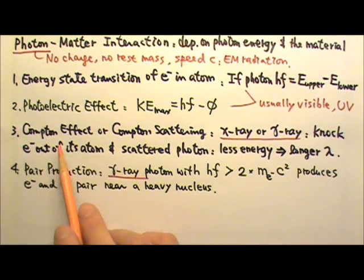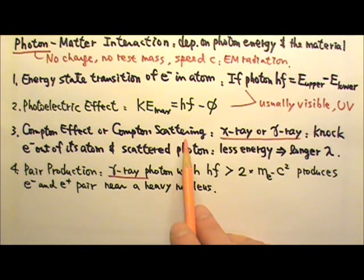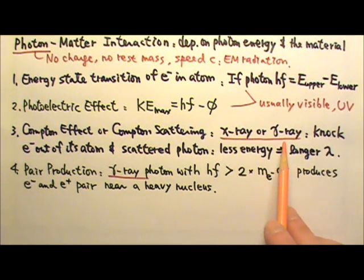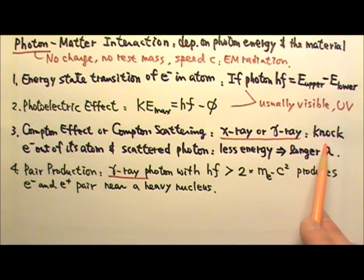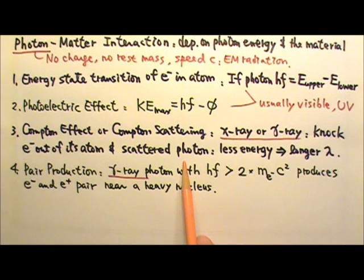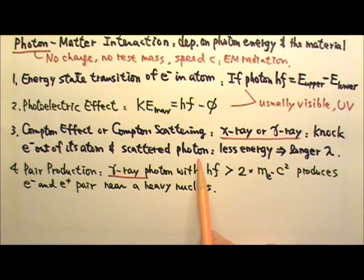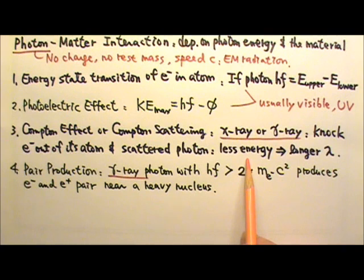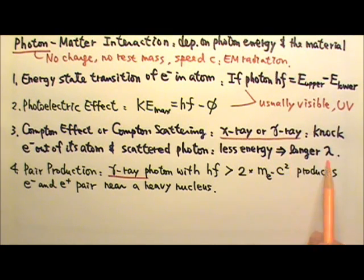Three: the Compton effect, or Compton scattering, happens when an X-ray or gamma ray photon is scattered by an electron inside a material, and the electron gets knocked out of its atom in conjunction with a new scattered photon. Because some of the original photon's energy is given to the electron, the new scattered photon has less energy than the original photon. When a photon carries less energy, its speed is still the speed of light, but its frequency is lower and its wavelength is longer.